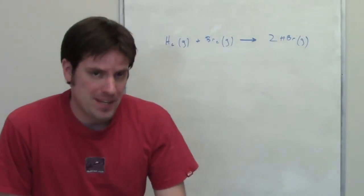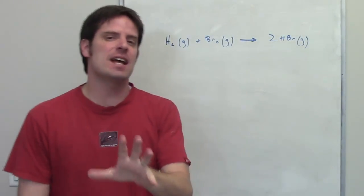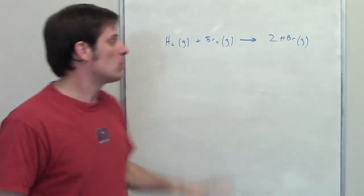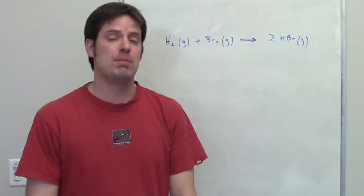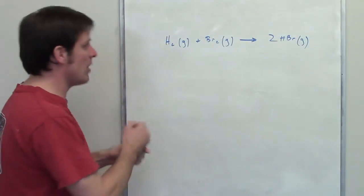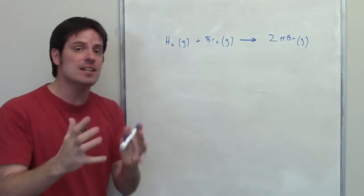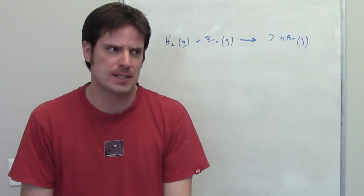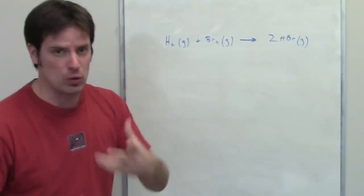In this question, it gives us this reaction and asks us to assume that this reaction proceeds by a simple one-step reaction. In other words, this is the rate-determining or slow reaction in this process. It then asks us to derive a rate law for it.